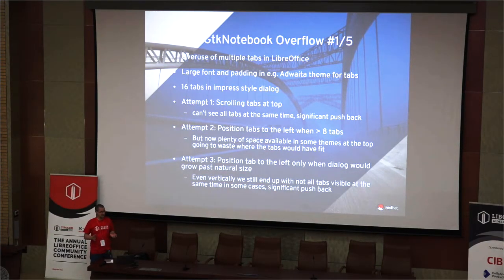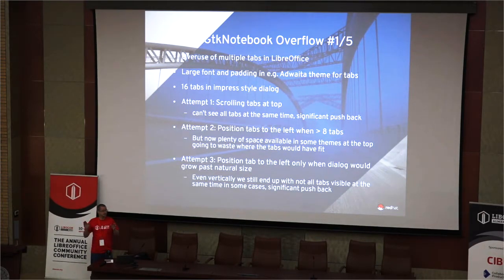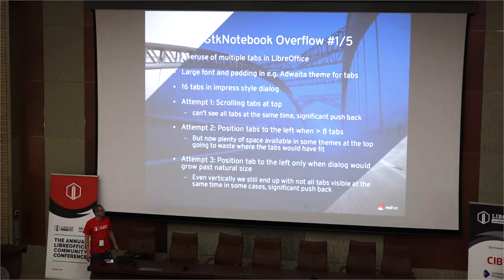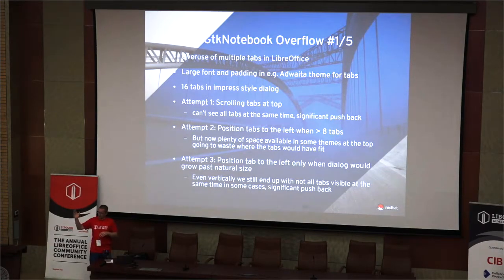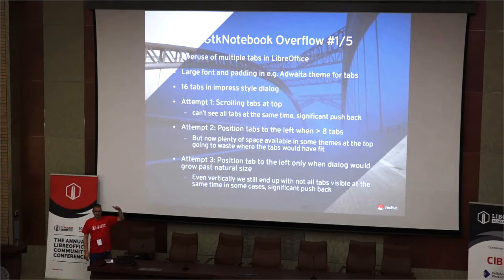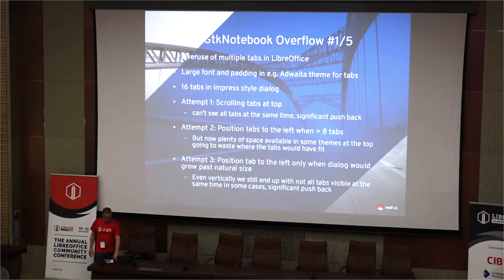The problem there is you can't see all the tabs at the same time, and there was a lot of pushback. Approach two, following HIG standards for GNOME, is that if you have more than eight tabs along the top, you put them down the left-hand side instead. But in some themes you can only fit about five or six things at the top, while in others you can fit maybe 10 or 15. So there was pushback saying you could have fitted all those tabs at the top. The hybrid approach — put tabs along the top if they fit, but move them to the left-hand side once the dialog begins to grow too wide — still runs into problems when entries down the left-hand side don't fit either.